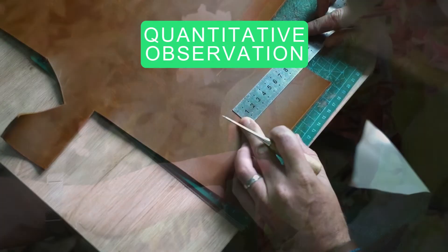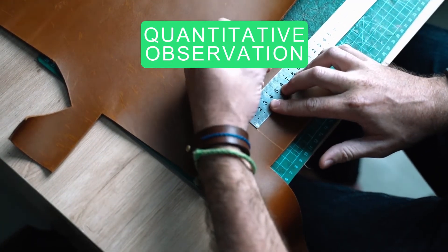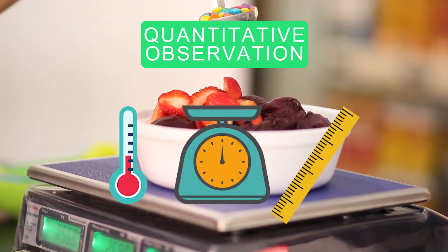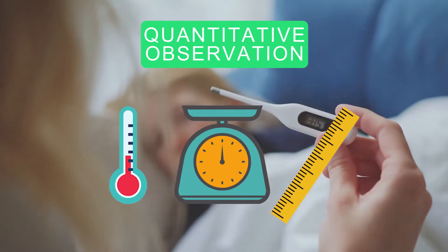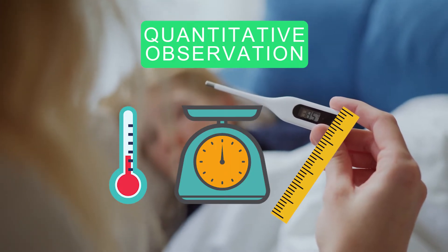In quantitative observations, we utilize instruments or tools such as rulers, balances, or thermometers to provide an observation that is measurable or quantifiable.